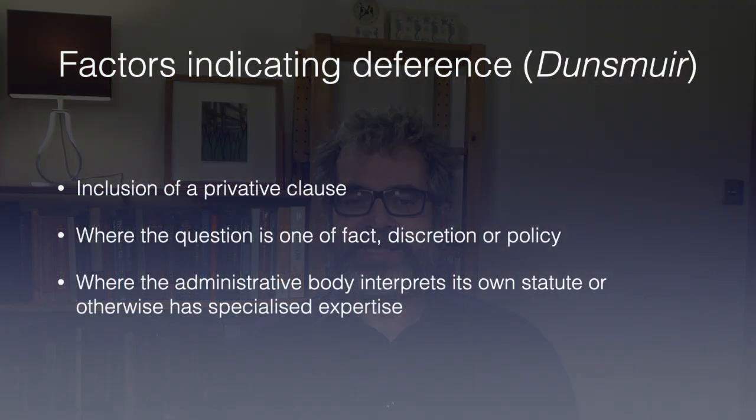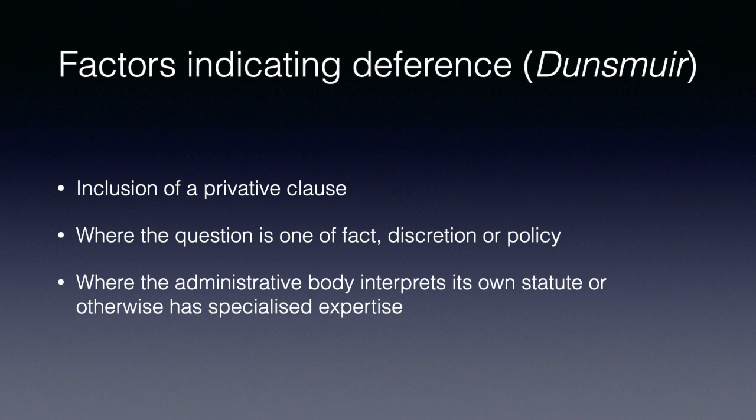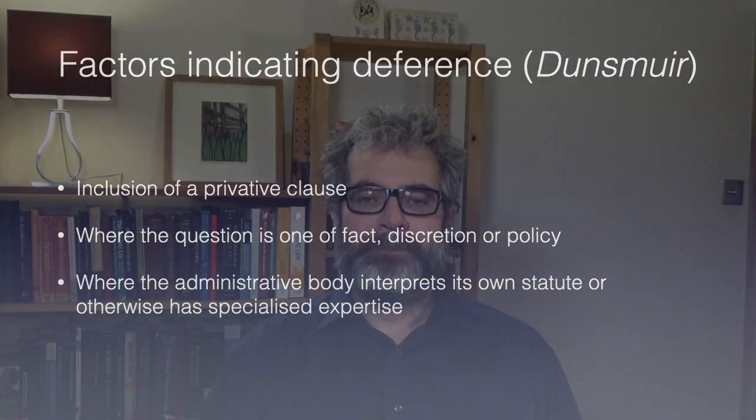According to the majority in Dunsmuir, the following factors indicate that deference is appropriate and that a reasonableness standard of review should apply. First, a privative clause is a statutory direction from Parliament or a provincial legislature indicating the need for deference. Second, where the question is one of fact, discretion or policy, deference will usually apply. Questions that can be characterised as mixed fact and law should also be approached through the deferential reasonableness standard. Third, where the tribunal is interpreting its own statute or statutes closely connected to its own statute, or where the administrative tribunal has developed particular expertise in the application of the law — for example in labour adjudication.